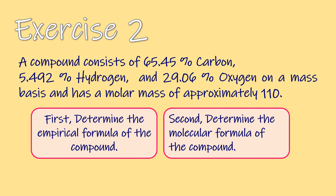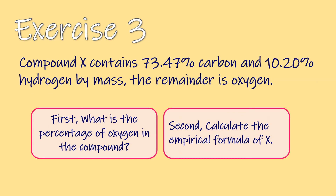Exercise 2: A compound consists of 65.45% carbon, 5.492% hydrogen, and 29.06% oxygen on a mass basis and has a molar mass of approximately 110. First, determine the empirical formula of the compound. Second, determine the molecular formula of the compound. Exercise 3: Compound X contains 73.47% carbon and 10.2% hydrogen by mass; the remainder is oxygen. First, what is the percentage of oxygen in the compound? Second, calculate the empirical formula of X.